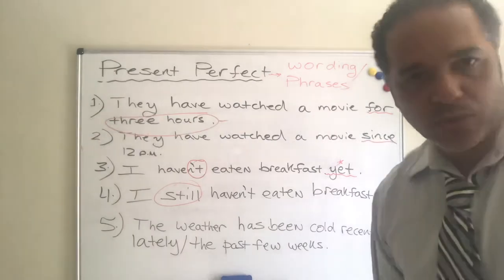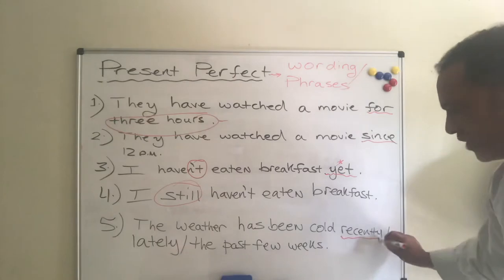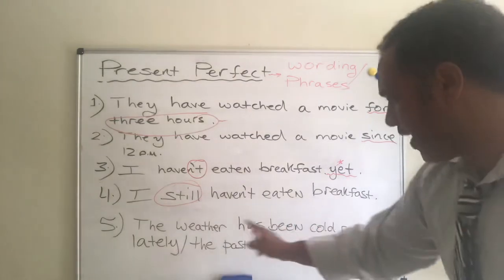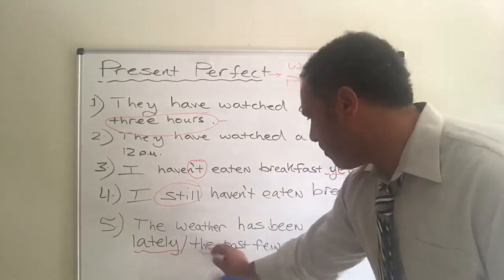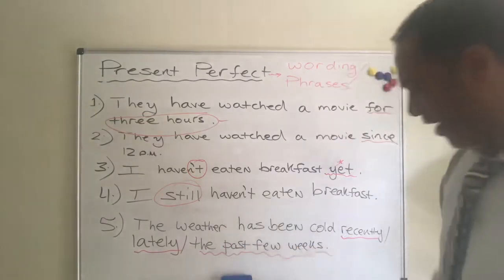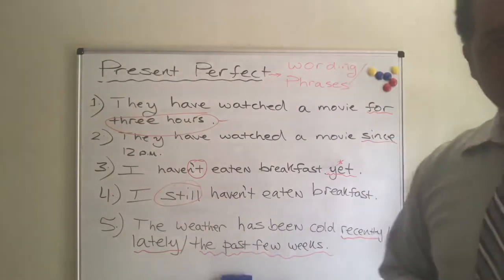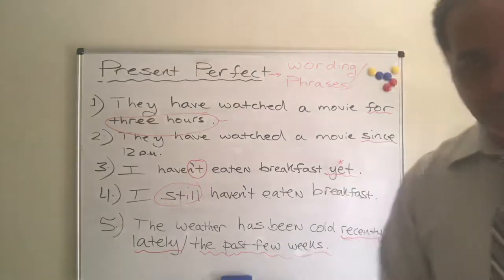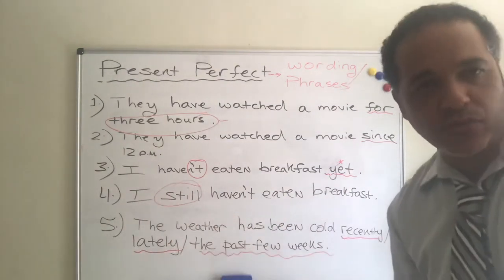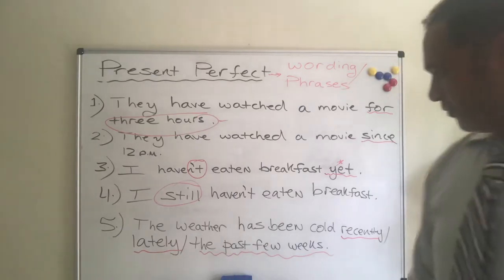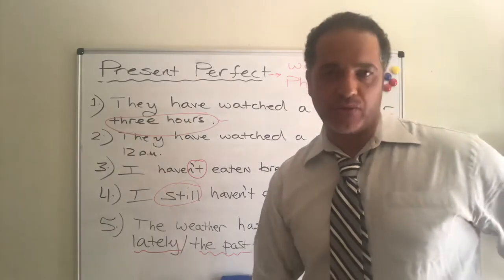Other words and phrases we use with present perfect: recently, lately, and the past few weeks. For example: the weather has been cold recently. The weather has been cold lately. The weather has been cold the past few weeks. Keep in mind, when I say the past few weeks, this does not mean past tense — it means present perfect, going back a couple of weeks with a connection until right now. These are the wordings we usually use with present perfect.